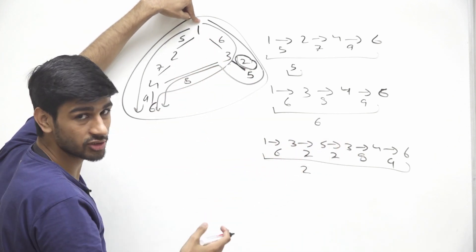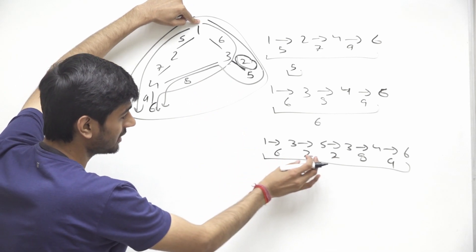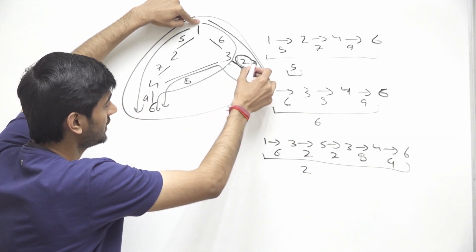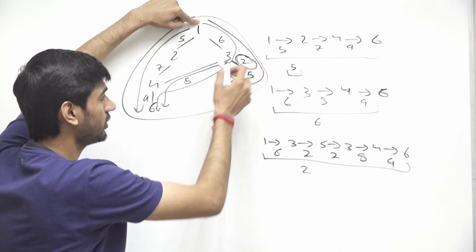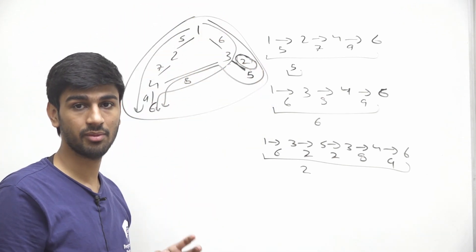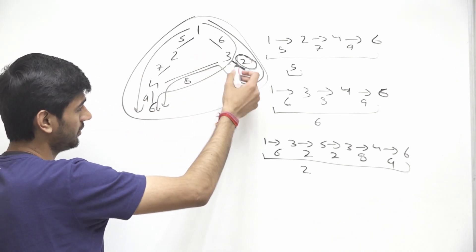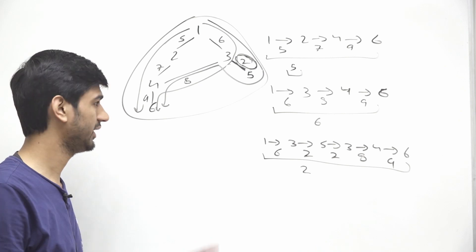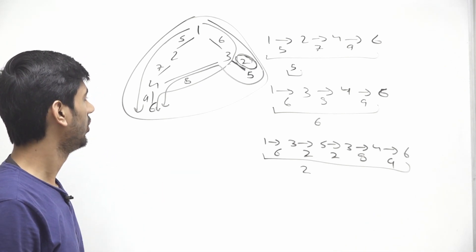So we will consider, we will always try to consider the edge with minimum weight. So if we are given with this graph, we can simply say that the minimum edge with the minimum weight will be the answer or we can say minimum score.